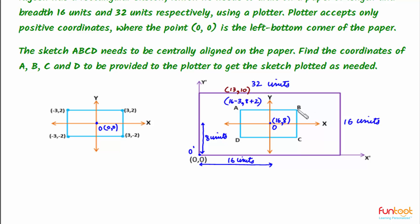Similarly for B, the original coordinates were (3, 2). So point B is 3 units to the right horizontally, so the X coordinate will become 16 plus 3. And it is 2 units up vertically, so the Y coordinate will become 8 plus 2.